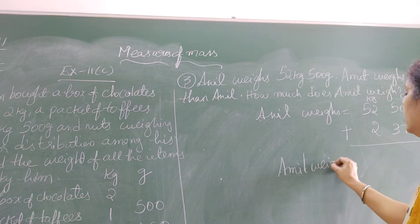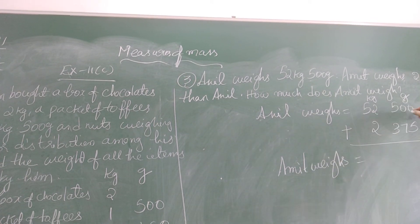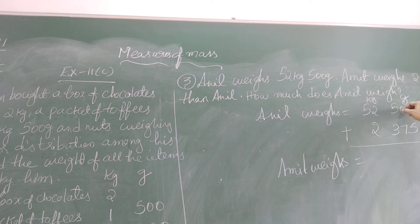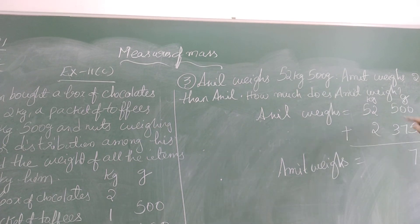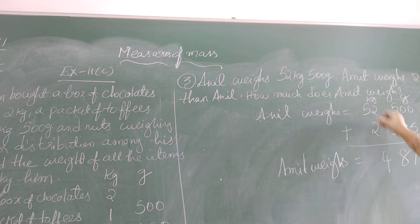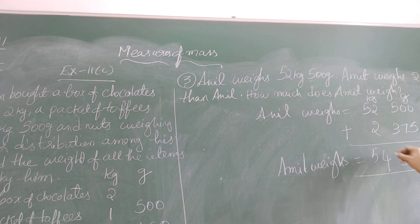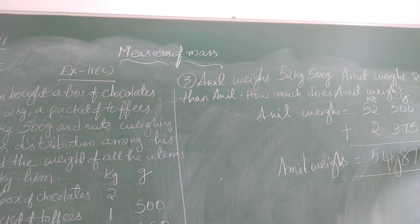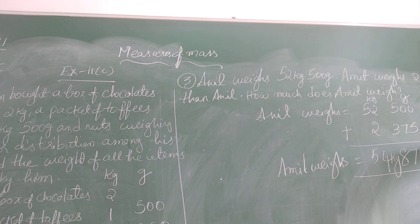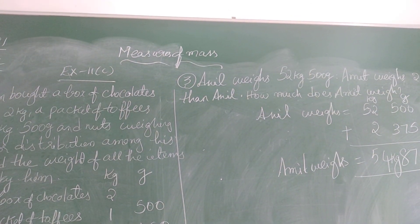So Amin weighs how much? Let us find out by adding: 0 plus 5 is 5, 0 plus 7 is 7, 5 plus 3 is 8, and 2 plus 2 is 4, and we only have 5. So the required weight — Amin weighs 54 kg and 875 grams. Thank you.